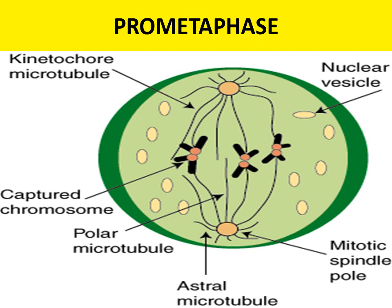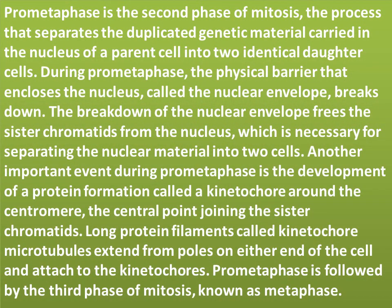The second phase is pro-metaphase. During pro-metaphase, the physical barrier enclosing the nucleus, called the nuclear envelope, breaks down. This breakdown frees the sister chromatids from the nucleus, which is necessary for separating the nuclear material into two cells. Another important event during pro-metaphase is the development of a protein structure called a kinetochore around the centromere — the central point joining the sister chromatids. Long protein filaments called kinetochore microtubules extend from poles on either end of the cell and attach to the kinetochores.